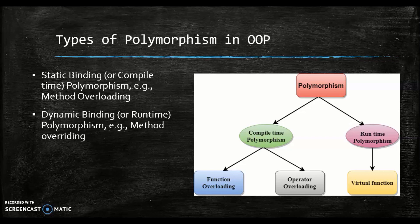What are the types of polymorphism in object-oriented programming? For one, we have static binding or compile time polymorphism — for example, method overloading. Two, we have dynamic binding or runtime polymorphism, which is method overriding.